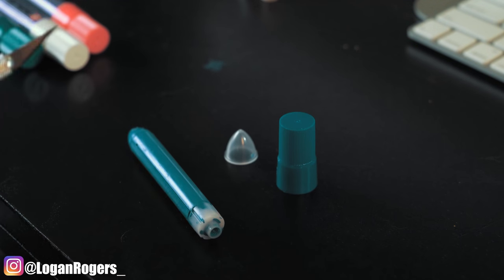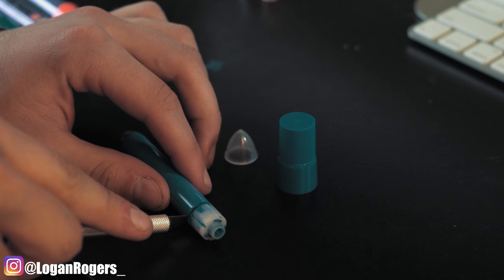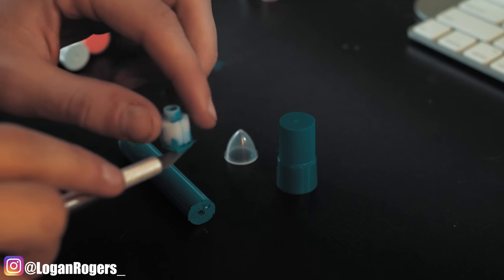Once you get it out you're gonna end up cutting off the bottom plastic piece. Now that bottom plastic piece you're gonna want to keep also because that's how you get it back into the Sakura.